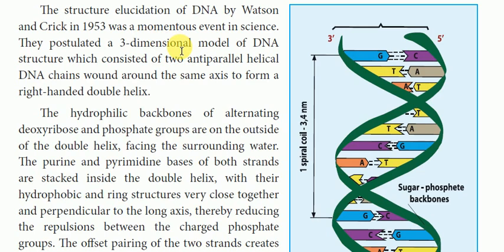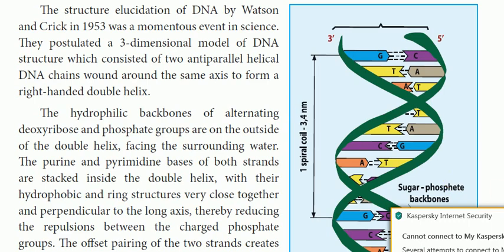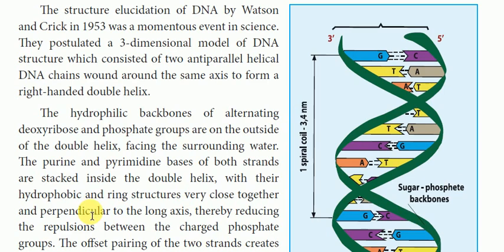They postulated a three-dimensional model of DNA structure, which consisted of two anti-parallel helical DNA chains wound around the same axis to form a right-handed double helix. Watson and Crick explained this in 1953: the three-dimensional model of DNA structure consists of two anti-parallel helical chains around the same axis.